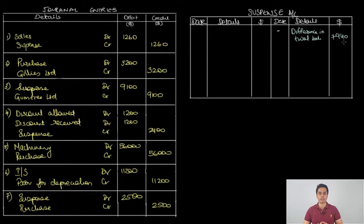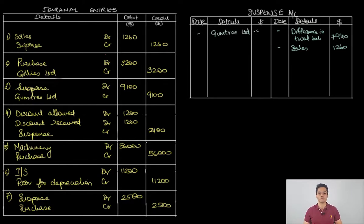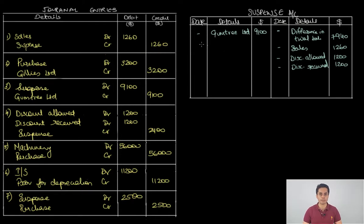Now let's analyze the errors and put them in the suspense account. In the first error, suspense is credited: credit side — Sales 1260. The second error has no impact on the suspense account as it is a two-sided error. In the third error, suspense is debited: debit side — Gumtree Ltd 9100. In the fourth error, suspense is credited: credit side — Discount Allowed 1200, Discount Received 1200, totalling 2400. The fifth and sixth errors have no impact on suspense — they are two-sided errors. In the last error, suspense is debited: debit side — Purchases 2500.